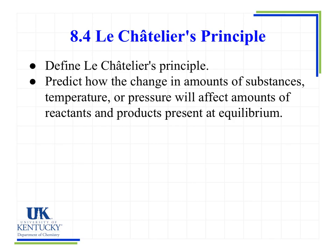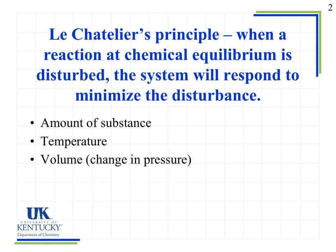In this lesson we're going to look at Le Chatelier's principle, and that's going to allow us to predict how changes in amounts, temperature, or pressure will affect what's present at equilibrium. Le Chatelier's principle tells us that when a reaction at chemical equilibrium is disturbed, the system will respond to minimize the disturbance. We're going to look at three different things that can disturb the system: the amount of substance, the temperature, and the volume, which results in a change in pressure.